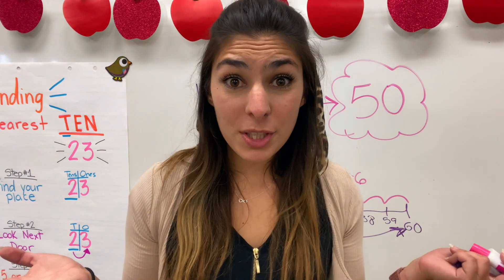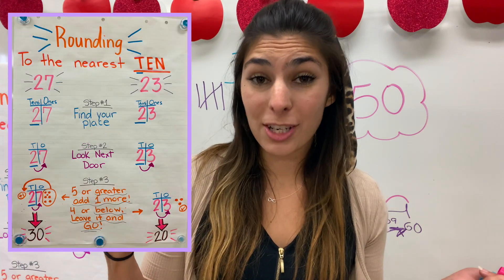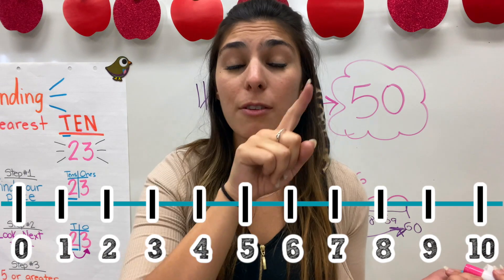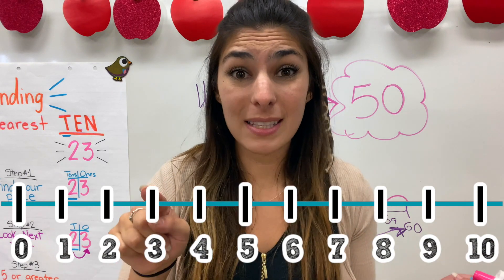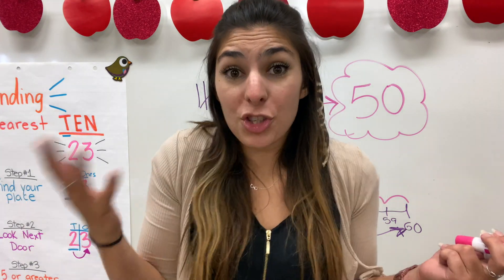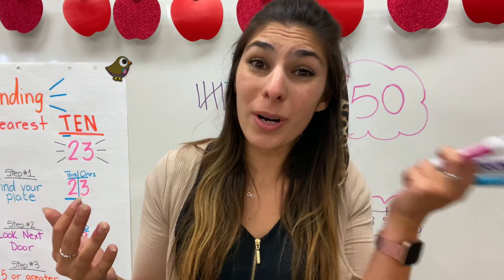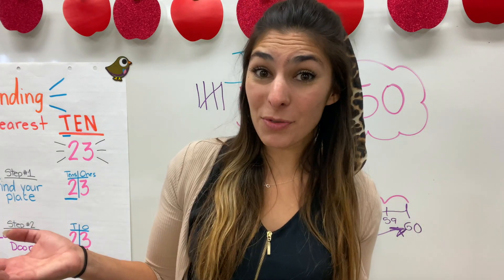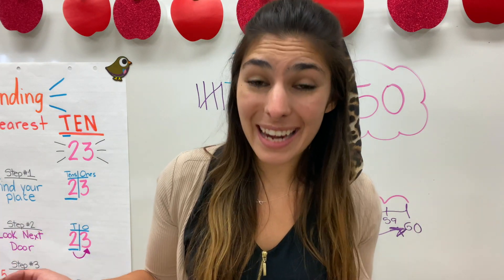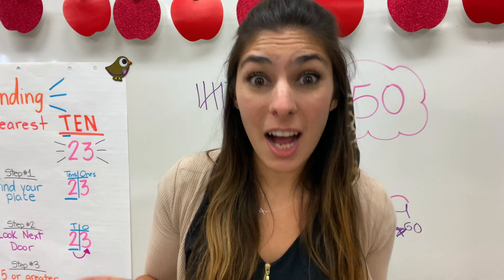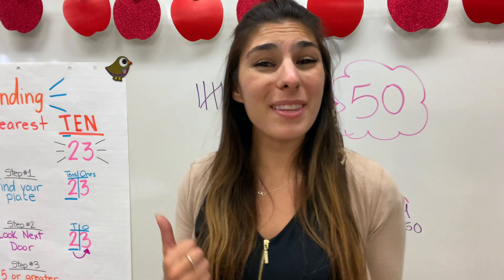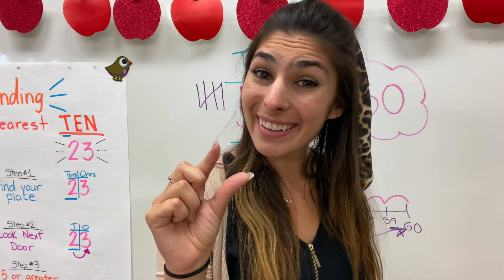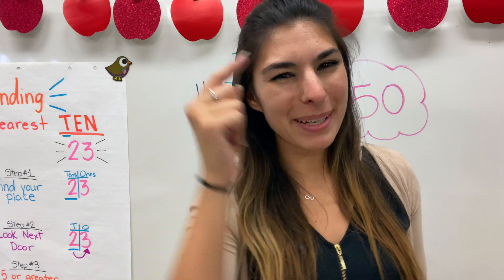So which one do you like better — do you like following the rhyme and just looking if it's five or more, or do you like making a number line to physically hop and see how many hops it takes? Should we jump up and add one more to the tens, or is it less than four and we should just leave it? That was rounding to the nearest ten. Next video will be rounding to the nearest hundred, where we'll follow the same steps. See you then, guys, and remember: keep on blooming!